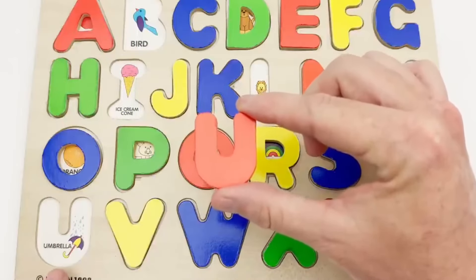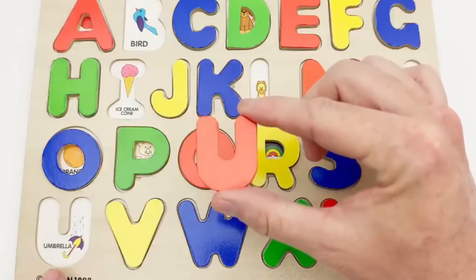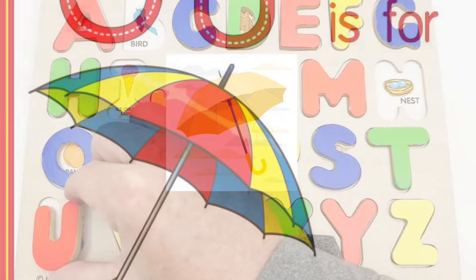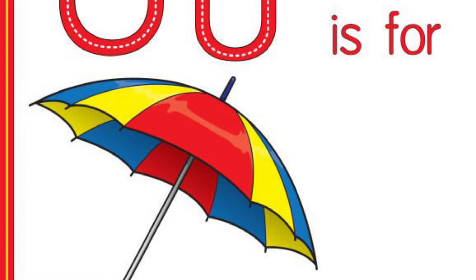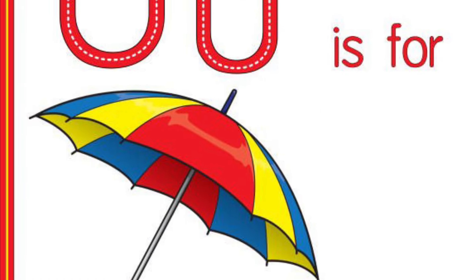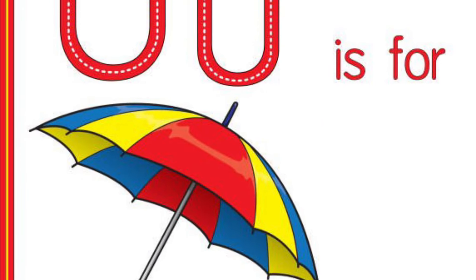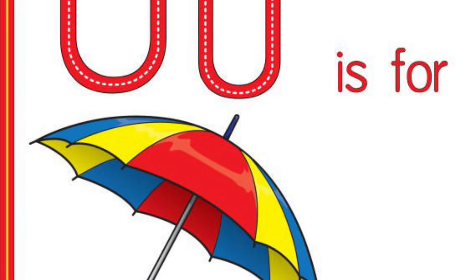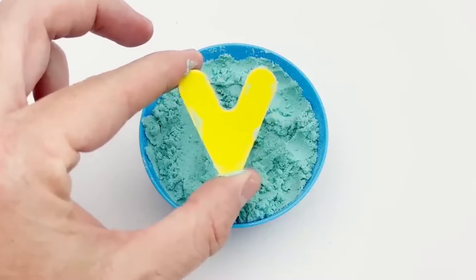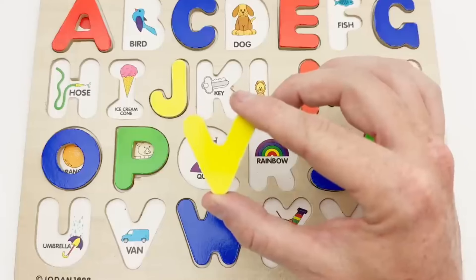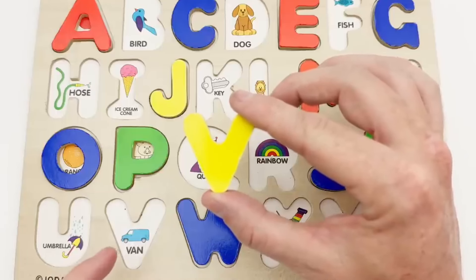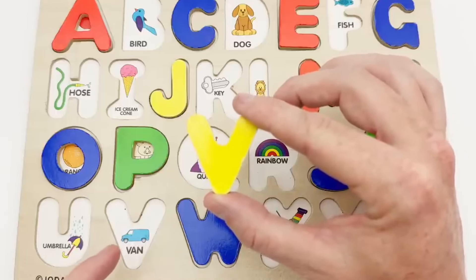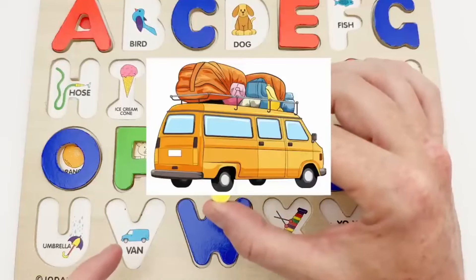U is for umbrella. Our yellow V goes down here. V is for van.